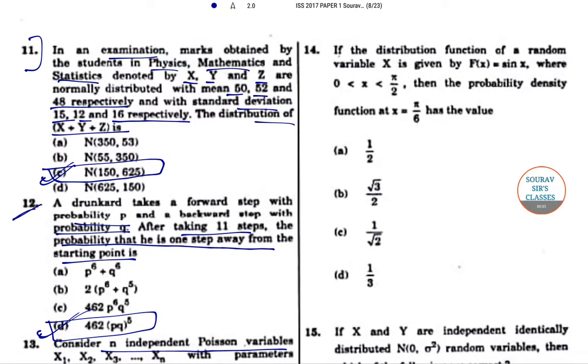Hello students, welcome to Saurav Sir's classes. The question is question 14. If the distribution function of a random variable X is given by F(x) = sin x, where 0 < x < π/2, then the probability density function at x = π/6 has the value.